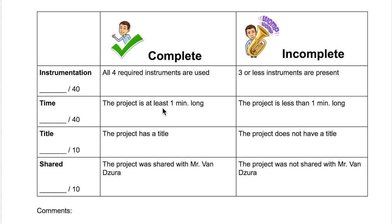This rubric is very simple. It's either you completed the objective, or you did not — it was incomplete. For instrumentation, if you had all four required instruments in your project, you get a 40 out of 40. If your project is at least one minute long, you get a 40 out of 40. If your project has a title, you get 10 out of 10. And if your project is shared with Mr. Vanzura, you also get 10 out of 10. So all you're doing is checking off each of these boxes and you'll get 100 pretty easily.